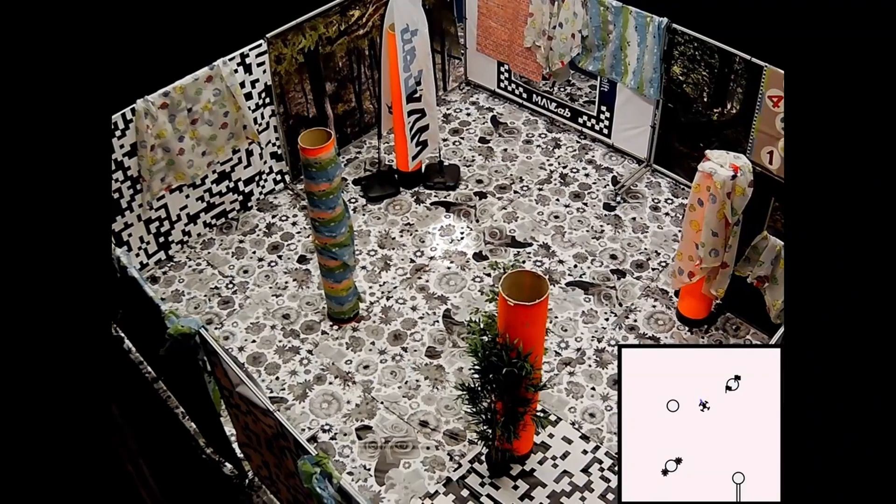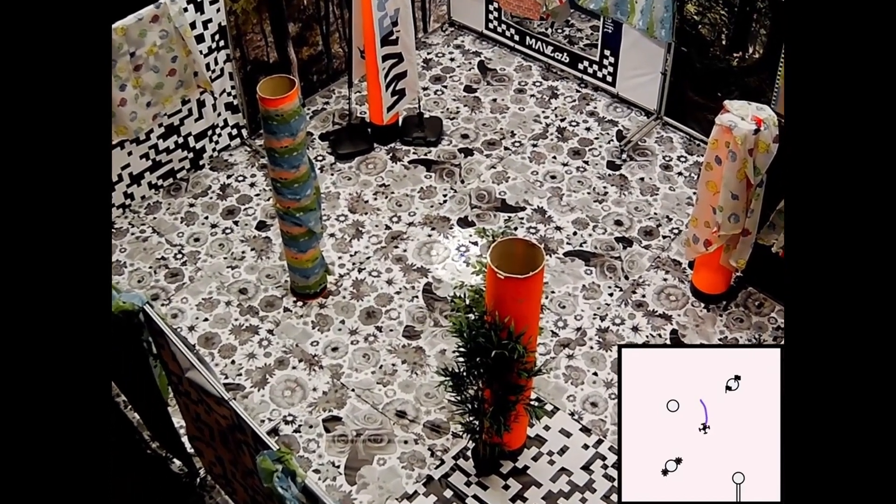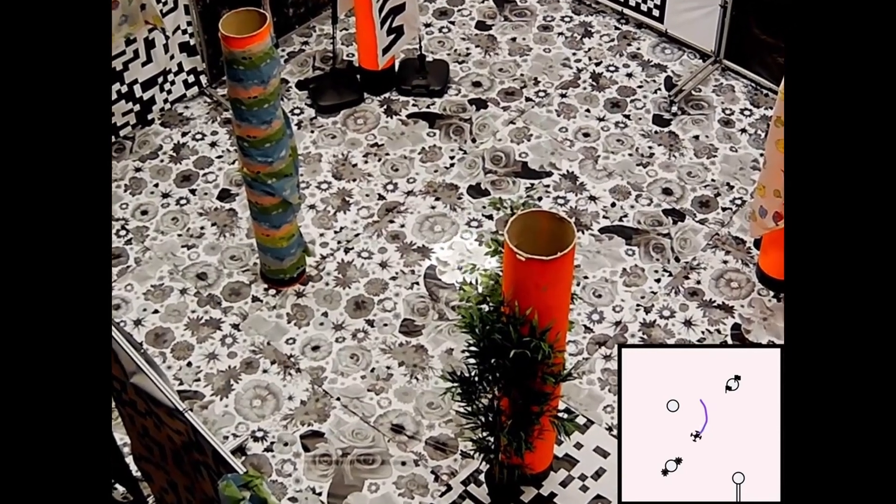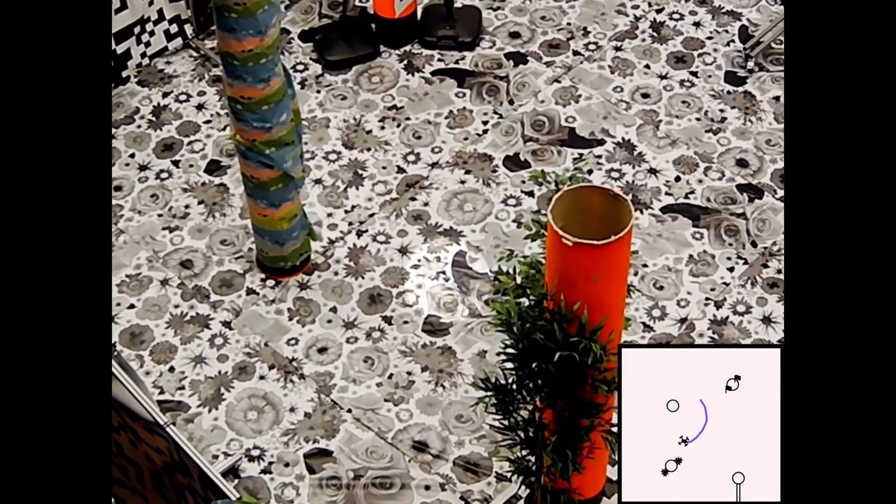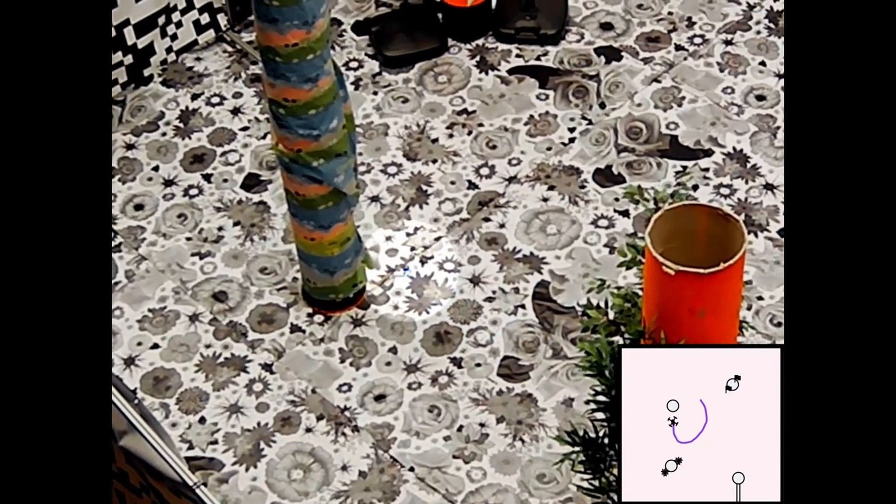We demonstrate NanoFlowNet in a real-world obstacle avoidance application on board a Bitcraze CrazyFly Nano quadcopter. We implement a horizontal balance strategy where the yaw rate is set based on the error between the sum of flow magnitudes in the left and right half of the flow estimate.